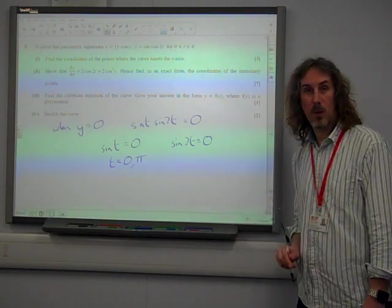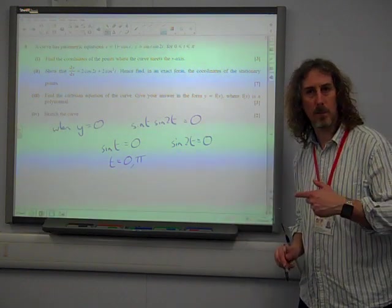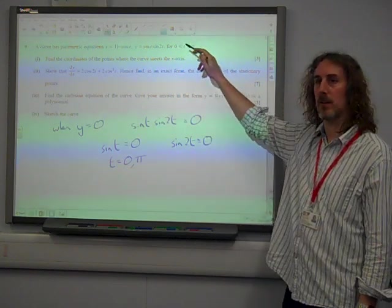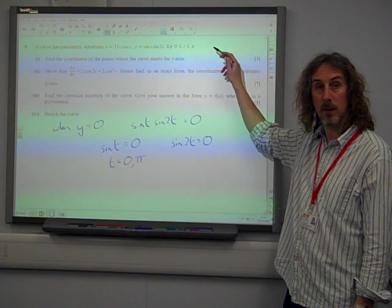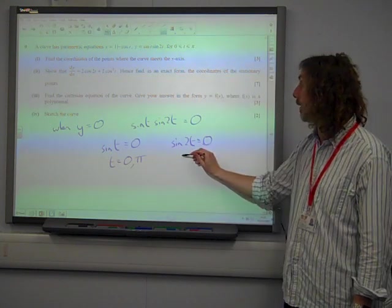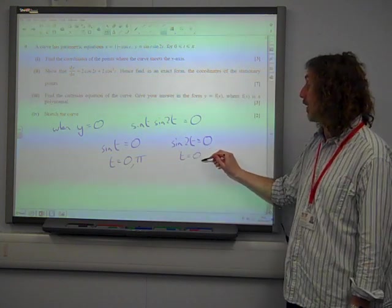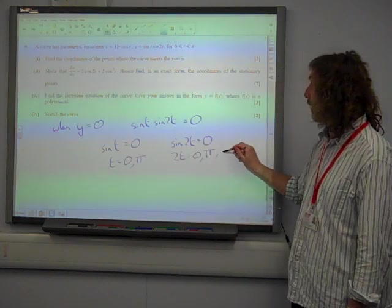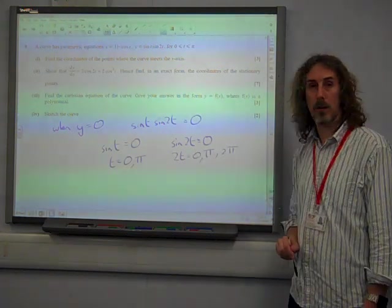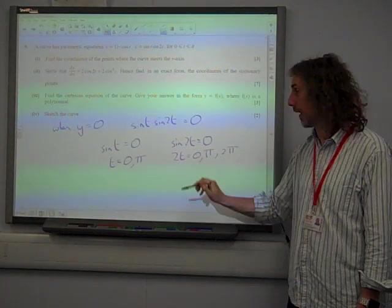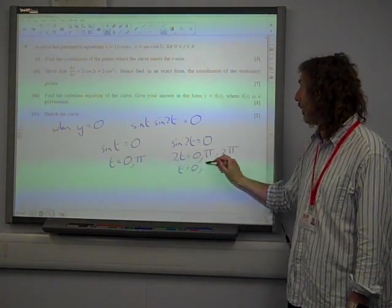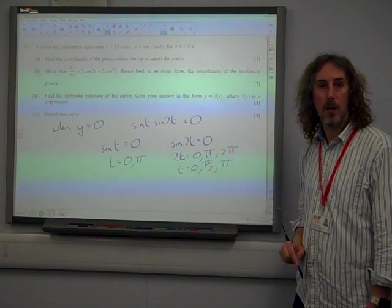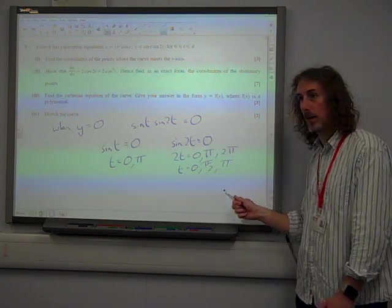This one, well this also gives us another value, because if t is between 0 and pi, 2t is between 0 and 2 pi. And 2 pi is also a solution. So 2t can be those three, and if we divide everything by 2, we get 0, pi by 2, and pi. So we've actually ended up with three points.